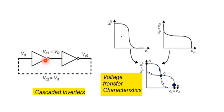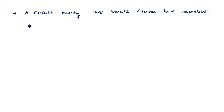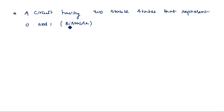A circuit having two stable states is called a bistable. There are two stable states, so the output will remain in that state until another triggering pulse appears. That is why it is called a bistable state — we can say it exhibits bistability.